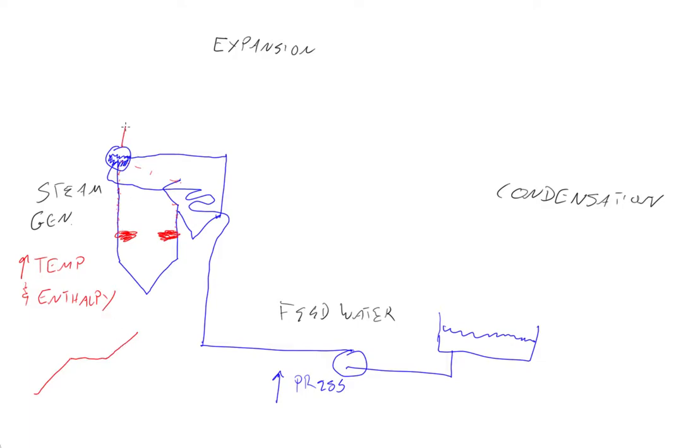So steam generation—and the next thing you do is expansion. This is where we take the thermal energy in the steam and convert it into kinetic energy by running it through a turbine.